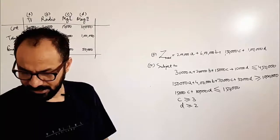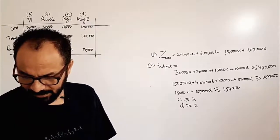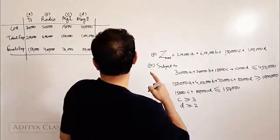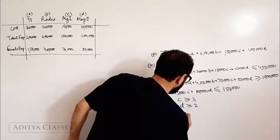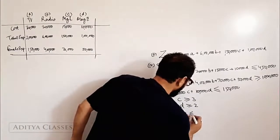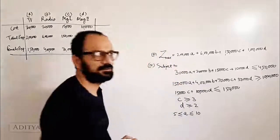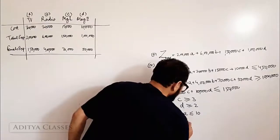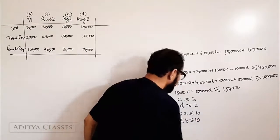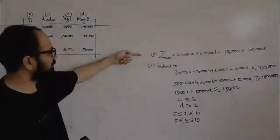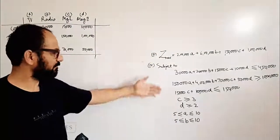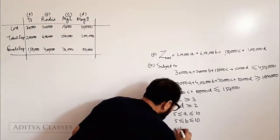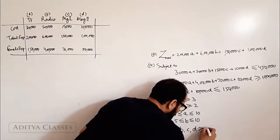The number of advertising units on television and radio should each be between 5 and 10. So A should be greater than or equal to 5 and less than or equal to 10. Similarly, B should be greater than or equal to 5 and less than or equal to 10. And finally, the physical constraints: A, B, C and D should all be greater than or equal to zero.